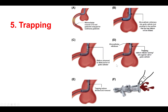A fifth key technique for CTO PCI — and for complex PCI in general — is the trapping technique. This technique allows removal of over-the-wire equipment when used over short guide wires. With a microcatheter and a guide wire in place, the microcatheter is pulled back into the guide catheter, and then a balloon is advanced into the guide — not over the wire — distal to the tip of the microcatheter. There are now specialized trapping balloons, such as the Trapper by Boston Scientific, that can be inserted without using the guide wire lumen. The balloon is then inflated, effectively pinning the guide wire against the wall of the guide catheter, allowing the microcatheter or any over-the-wire equipment to be removed while wire position is maintained.